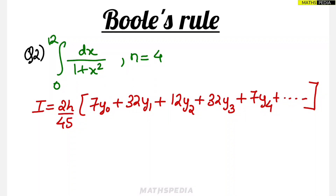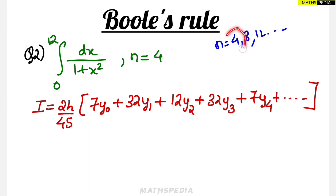We are going to find the numerical indication — that means the definite integral of the given question using Boole's Rule. There is a restriction: the n value should be taken as a multiple of 4, such as 4, 8, 12, and so on. If the question specifies the interval, use that; otherwise you can take 4, 8, or 12. It is better to take 4 as the interval because the calculations will be less.